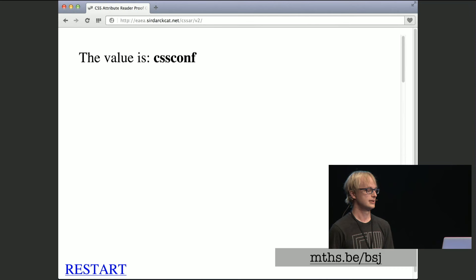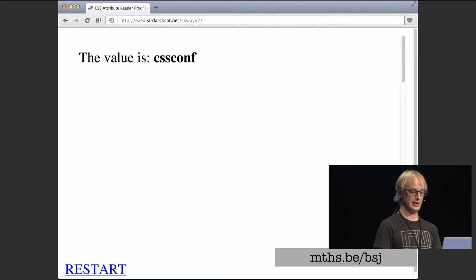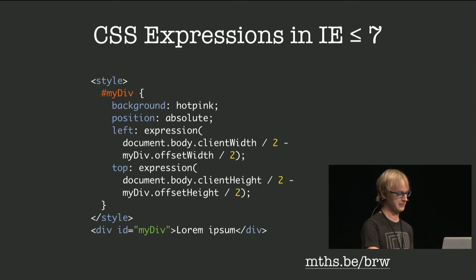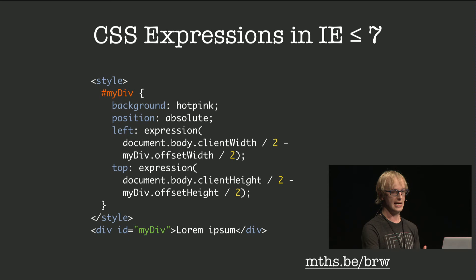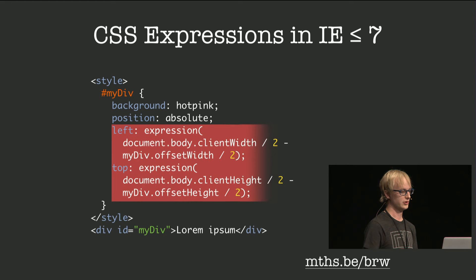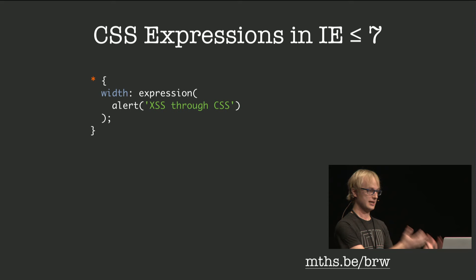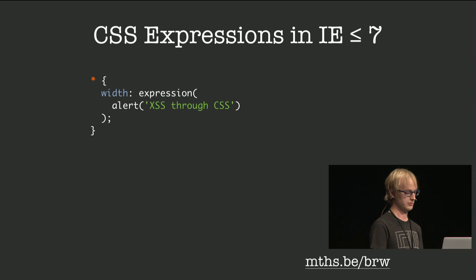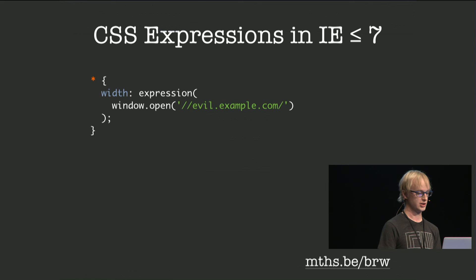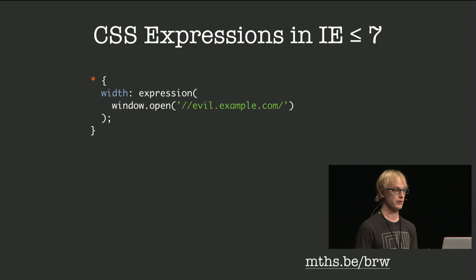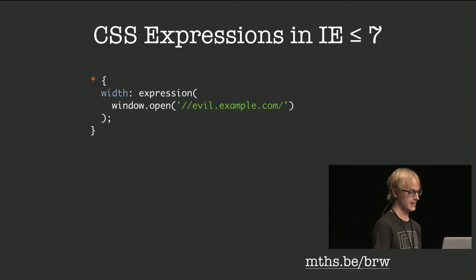It could be worse still — there could be an efficient way to leak data. IE5 introduced CSS expressions, supported up to IE7, which let you dynamically calculate CSS property values. If you look at the syntax, the code wrapped in expression() is actually JavaScript — so CSS expressions are basically a way to run JavaScript in CSS. You have full access to the DOM and all browser methods. You could show an alert, or open a new window to a URL of your choice — like a phishing site that pretends to be the original website but steals your data.